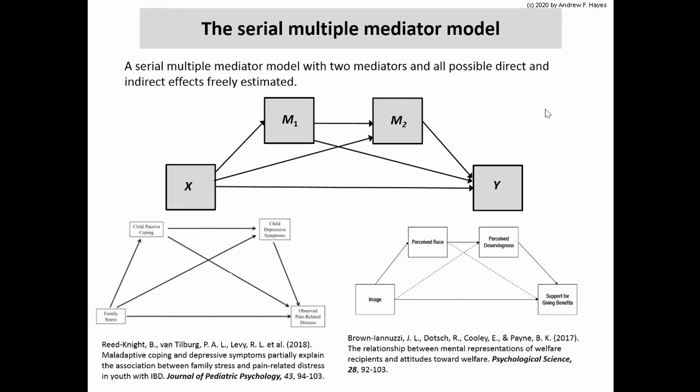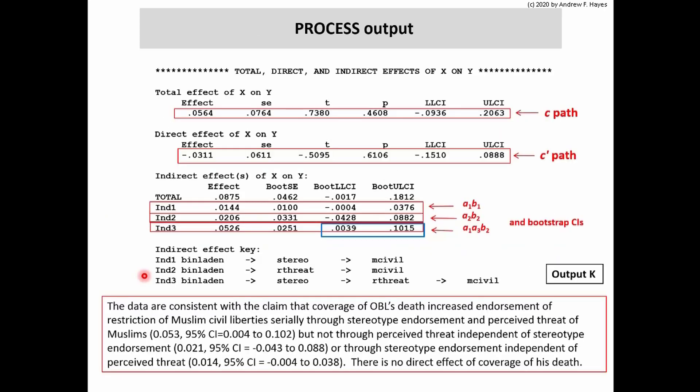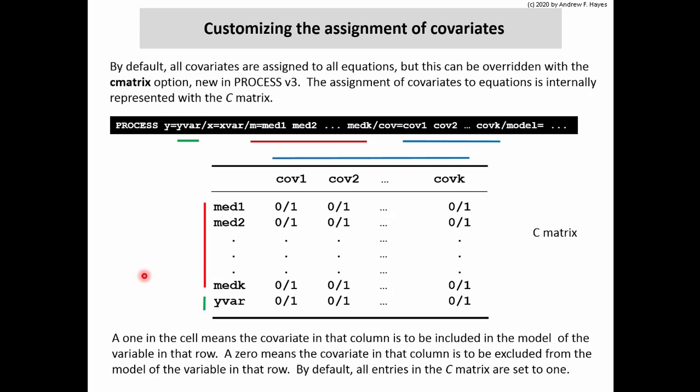It's the indirect effect of X on Y — the analysis of a serial multiple mediator model using process. In this module I also introduce you to an option in process that allows you to custom specify where to assign covariates in the equations defined in a mediation model. What we're moving toward is another conditional process analysis with two mediators. This time we're going to do a conditional process analysis and assign covariates to be in some equations and not others. By default, when you list covariates in the process command, those covariates end up in all equations that are estimated. We can override this with something called a C matrix option.